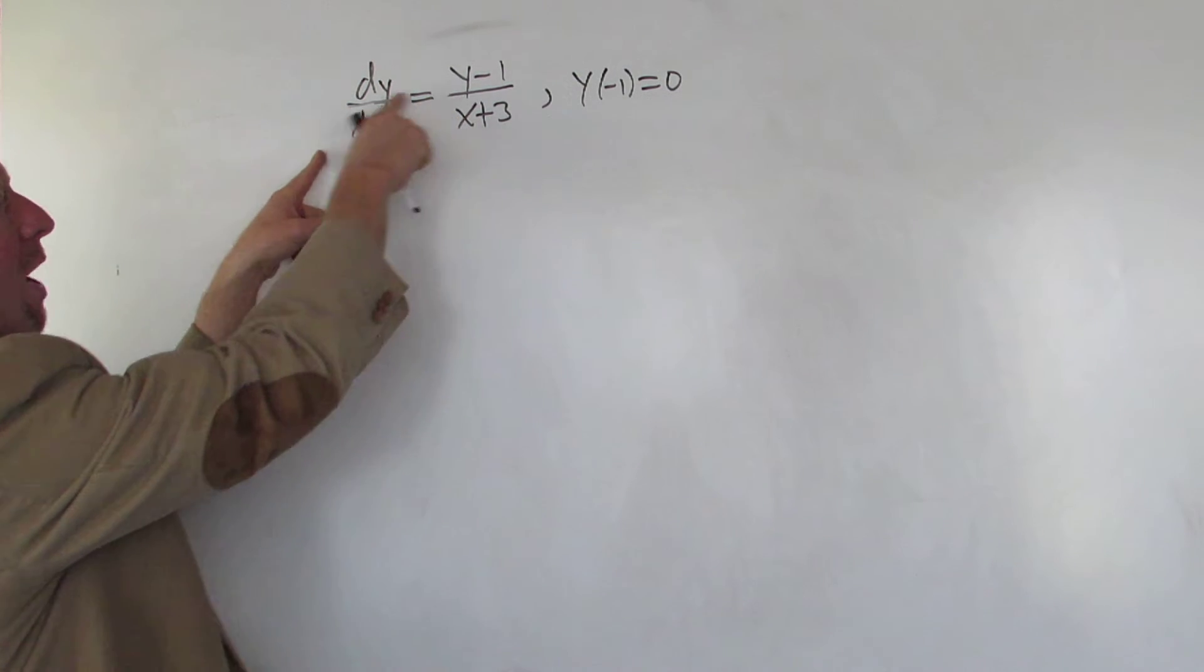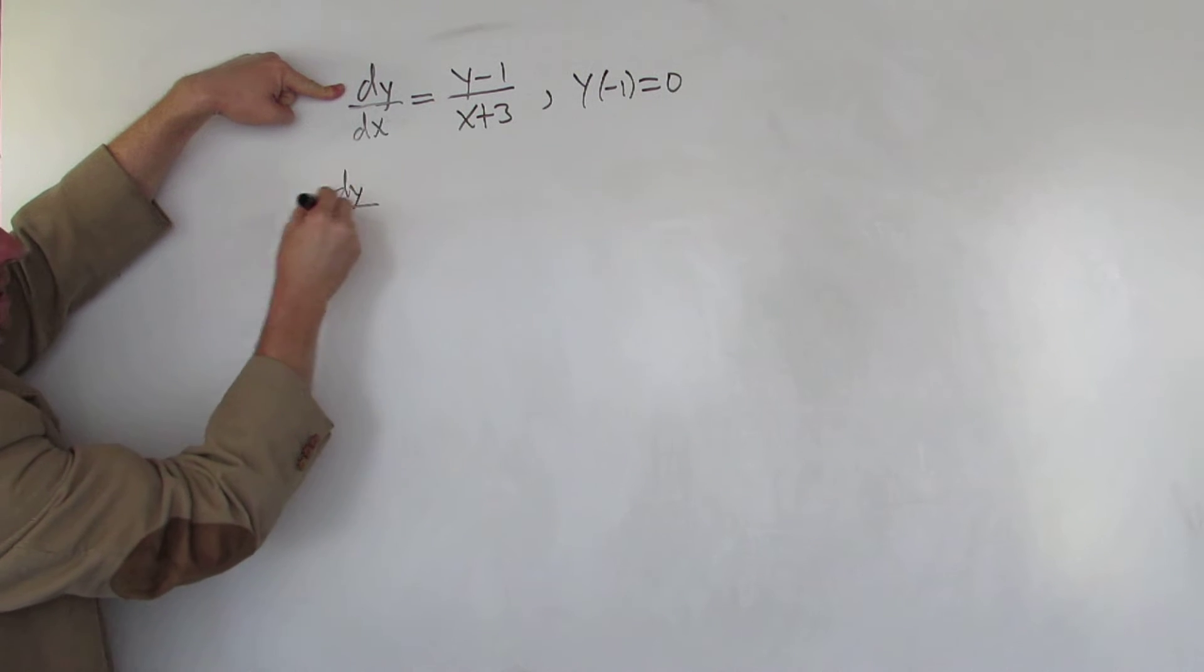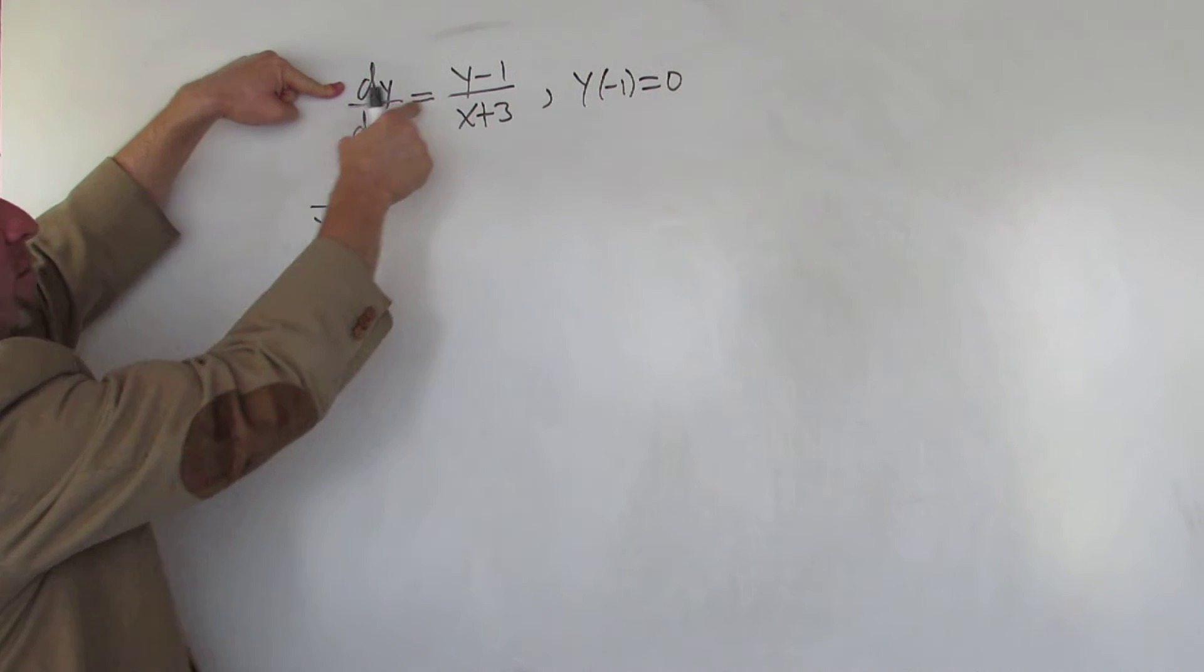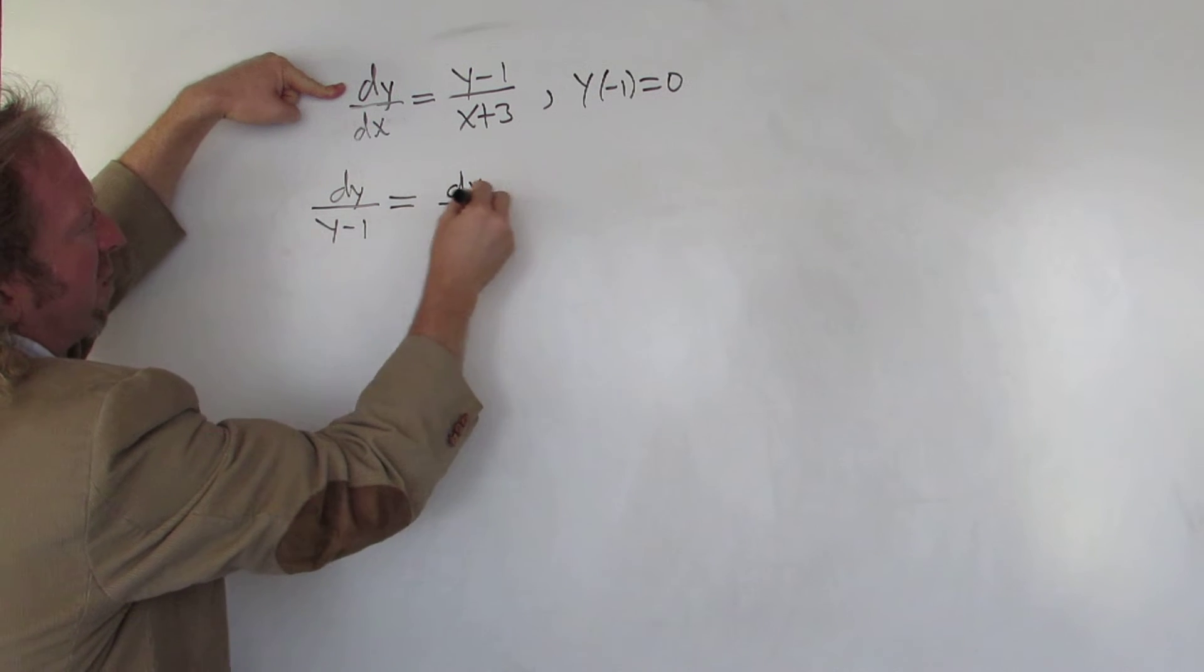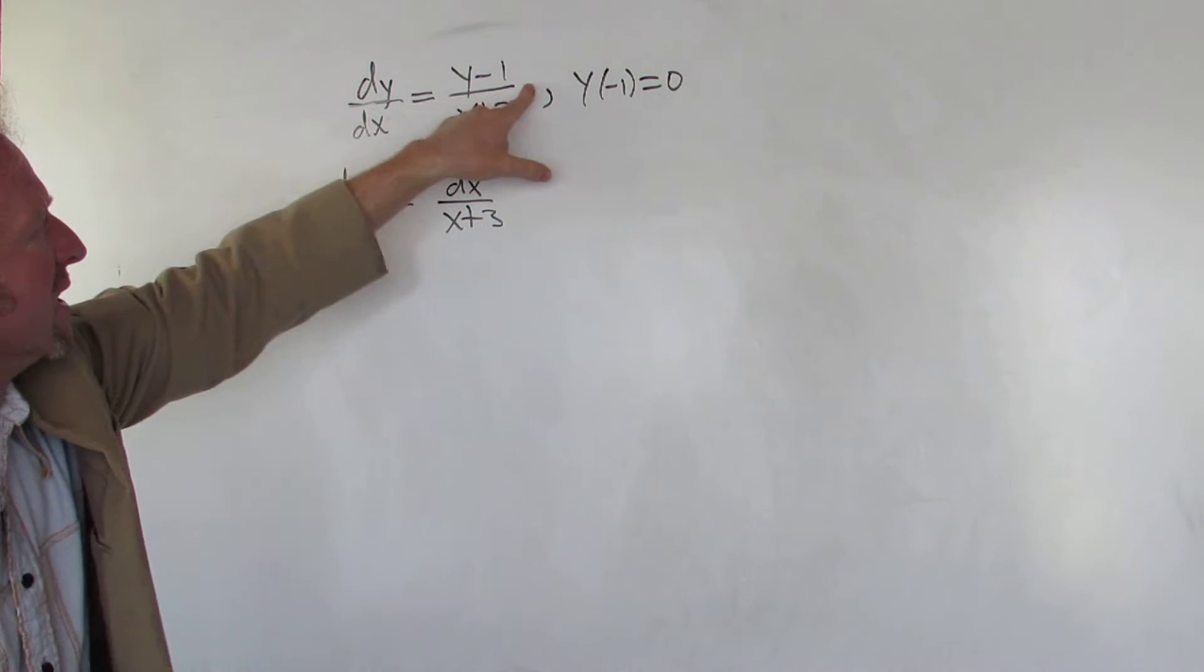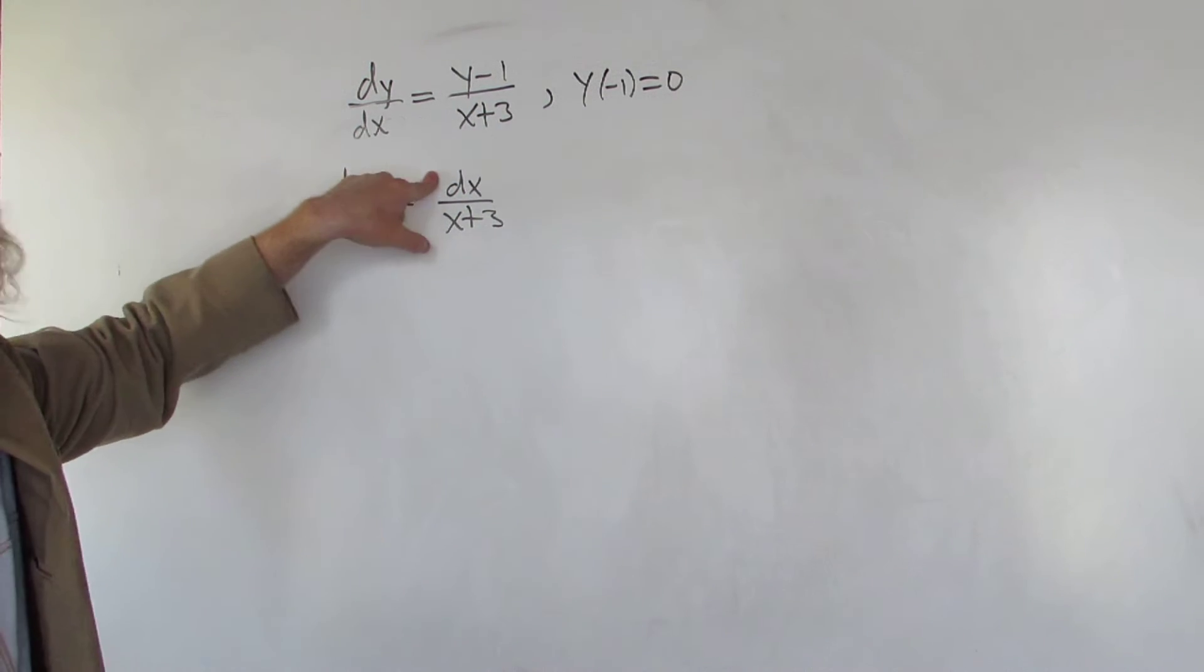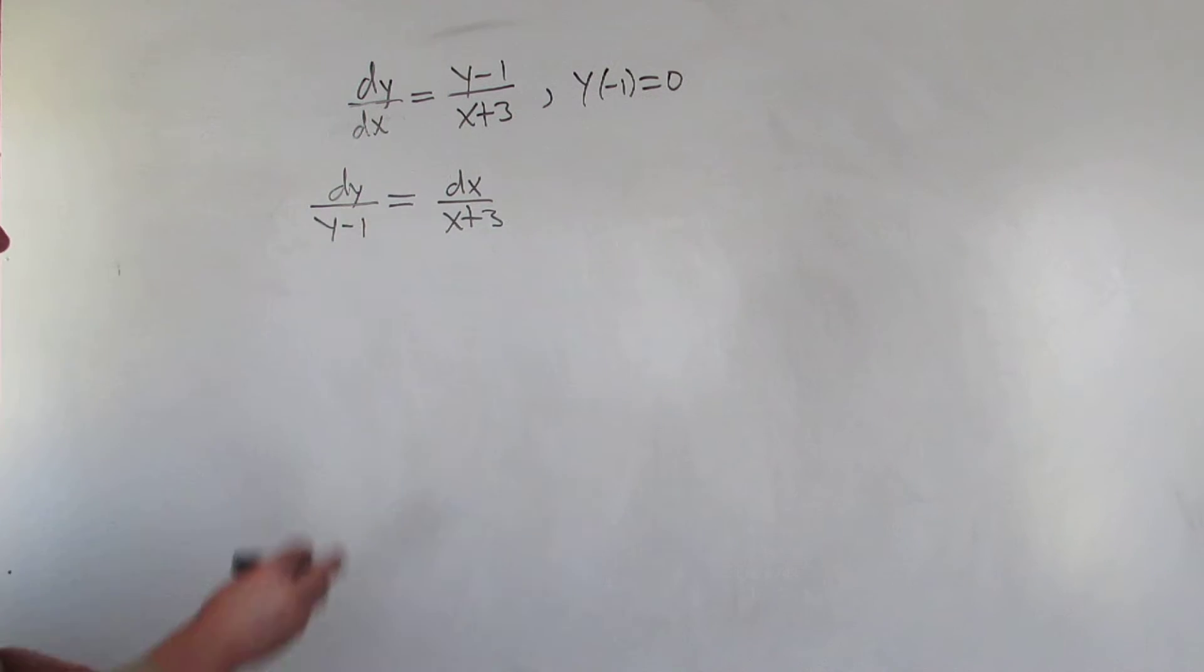If we divide by y minus one, we get dy over y minus one. Then multiply by dx, that gives us dx over x plus three. So we multiply by dx, we get one over x plus three dx. Divide by y minus one, and now we can integrate both sides.